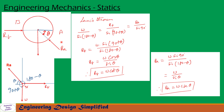Alternately, we can solve this problem using Lamy's theorem. The free body diagram of the sphere is drawn here, and from this we can draw a system of forces. W is acting downwards, Rb is acting towards right, and the angle between W and Rb is 90 degrees. Ra is acting at angle theta from horizontal. From this, the angle between Ra and Rb is 180 degrees minus theta, and the angle between W and Ra is 90 plus theta.